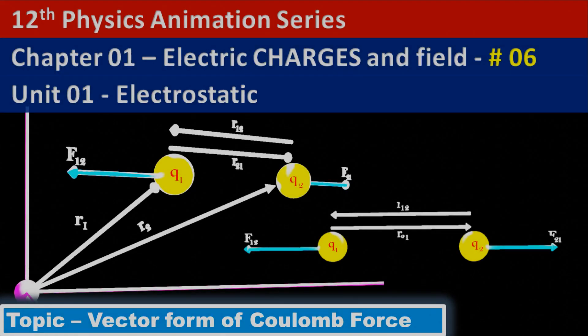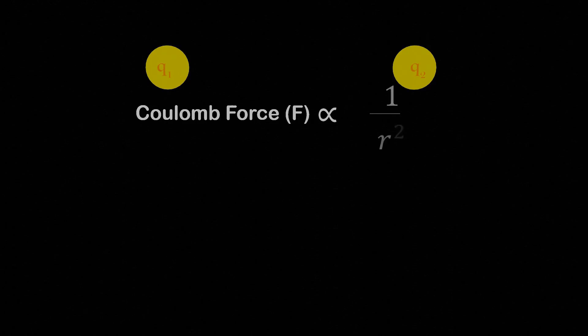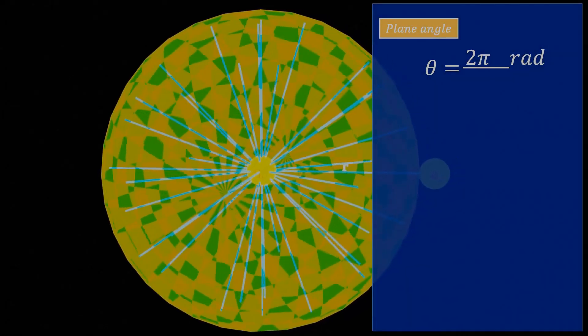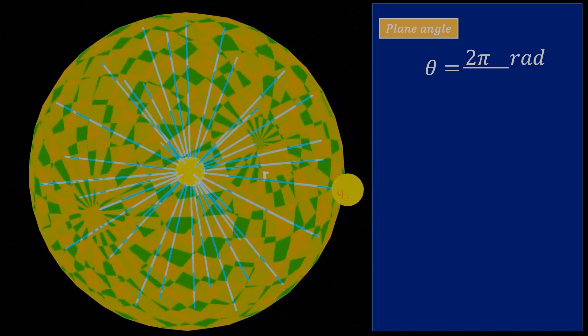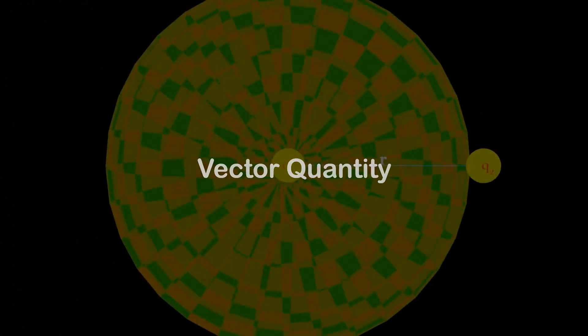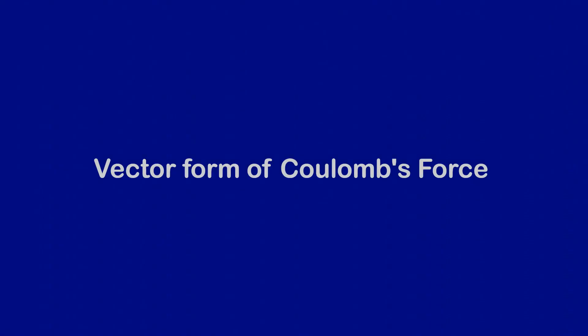Hello friends, welcome to the 6th video of the 12th physics animation series. In the last video, we explained Coulomb's force and learned about the factors on which the magnitude of the Coulomb force between two charges depends. However, we know that force not only has magnitude but also direction, which means that force is a vector quantity. In today's video, we will understand the vector form of Coulomb's force.